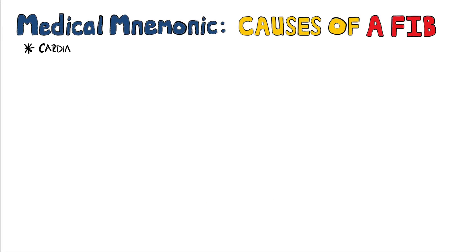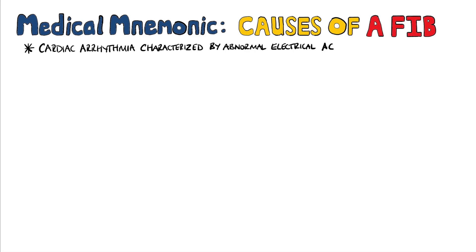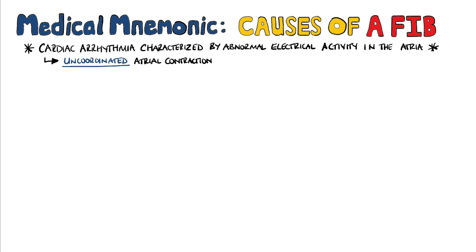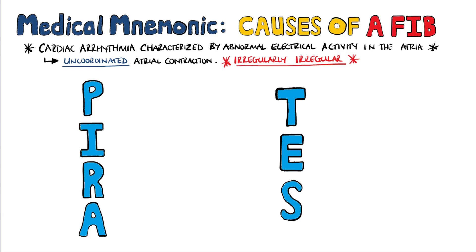PIRATE is a medical mnemonic to remember the causes of atrial fibrillation. AFib is a cardiac arrhythmia characterised by abnormal electrical activity in the atria, leading to a rapid and uncoordinated atrial contraction. The electrical signal conducted down into the ventricles has no regular pattern in AFib, therefore the rhythm is classically described as being irregularly irregular, because there's no pattern to the irregular heart rhythm that these patients have.